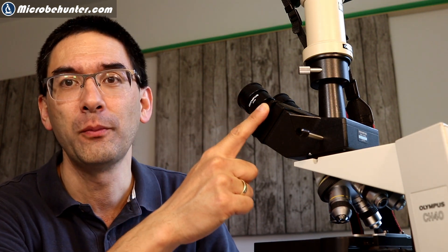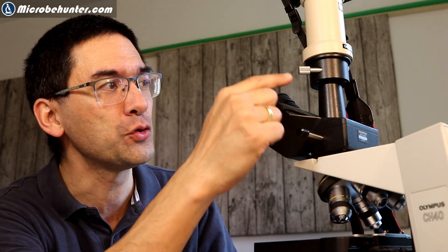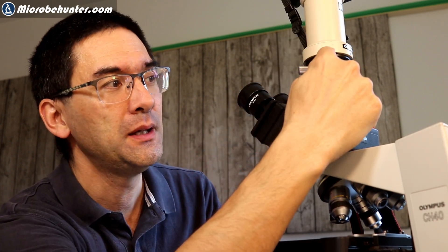So hi, MicrobeHunter here. Oliver is here. And today I received a question about trinocular heads for microscopes. These are the microscope heads that have a fold tube so that you can connect the camera. And the question is now as follows.